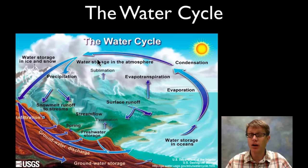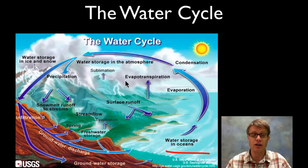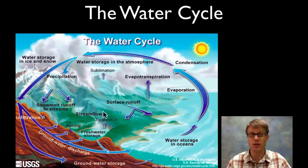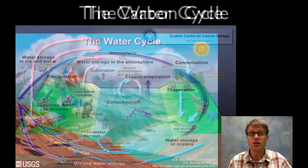And so the water in a water bottle used to be water in an ocean. It used to be water in a plant. It used to be water in a swamp. It's just recycled over and over and over again. So that's the water cycle.